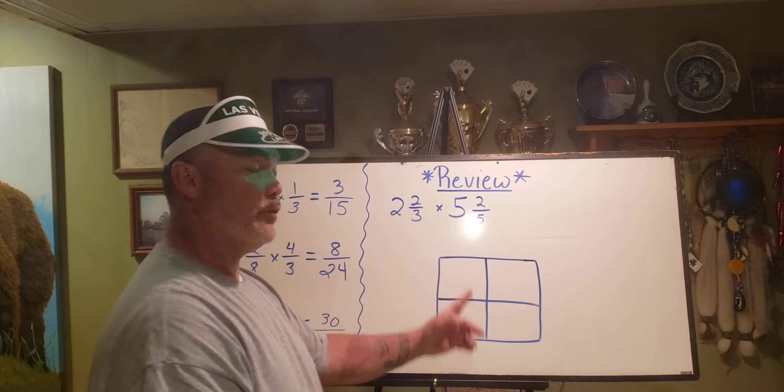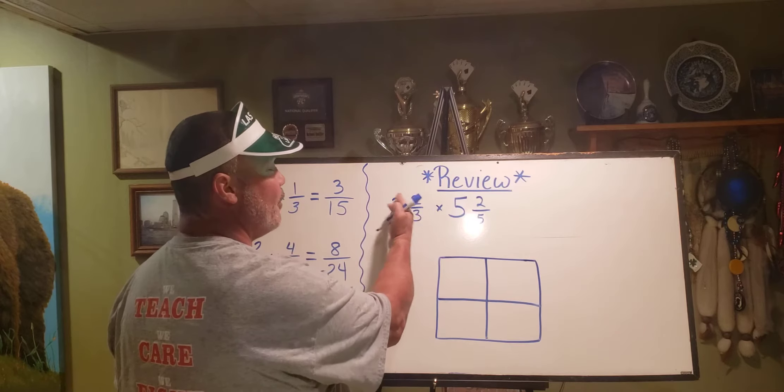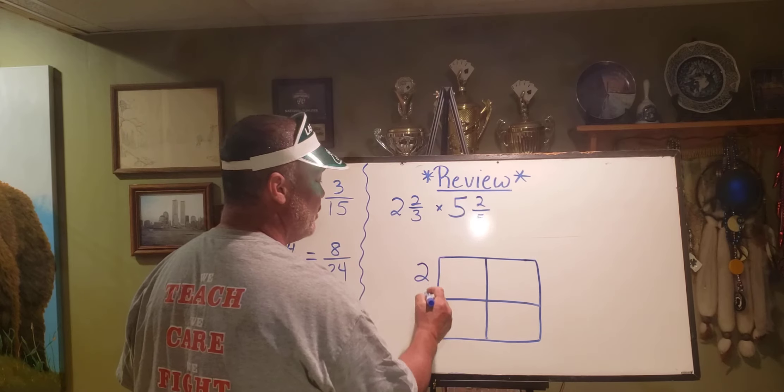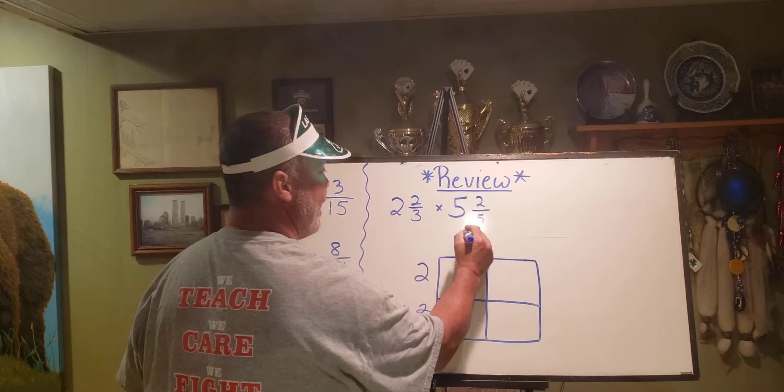Mixed numbers: two and two thirds. This was the area model. We've done this in the past. I told you I like to take the first fraction, decompose it, and use it on the right or the left side. Two and two thirds equals four thirds, times five and two fifths.